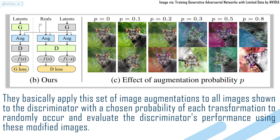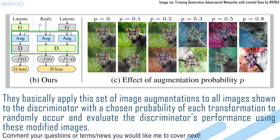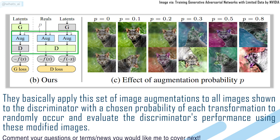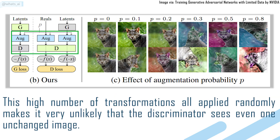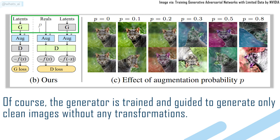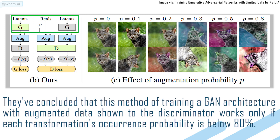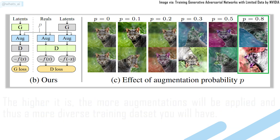They basically applied this set of image augmentations to all images shown to the discriminator, with a chosen probability of each transformation to randomly occur, and evaluate the discriminator's performance using these modified images. This high number of transformations all applied randomly makes it very unlikely that the discriminator sees even one unchanged image. Of course, the generator is trained and guided to generate only clean images without any transformations. They concluded that this method works only if each transformation's occurrence probability is below 80%.